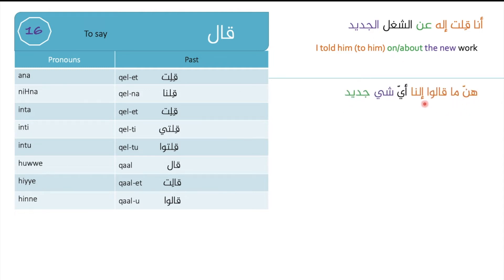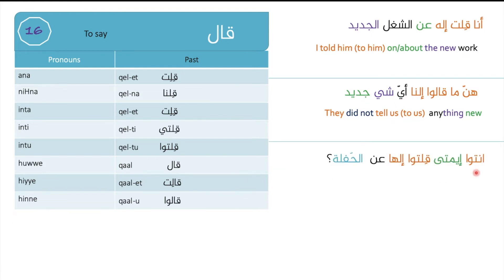Second example: henne ma alu ilna aishi jdeed — they didn't tell us anything new. Again, two alifs appear in writing but speakers jump over them as they are airy letters. So people say: henne ma alu lna — they didn't tell us — henne ma alu lna aishi jdeed, anything new.